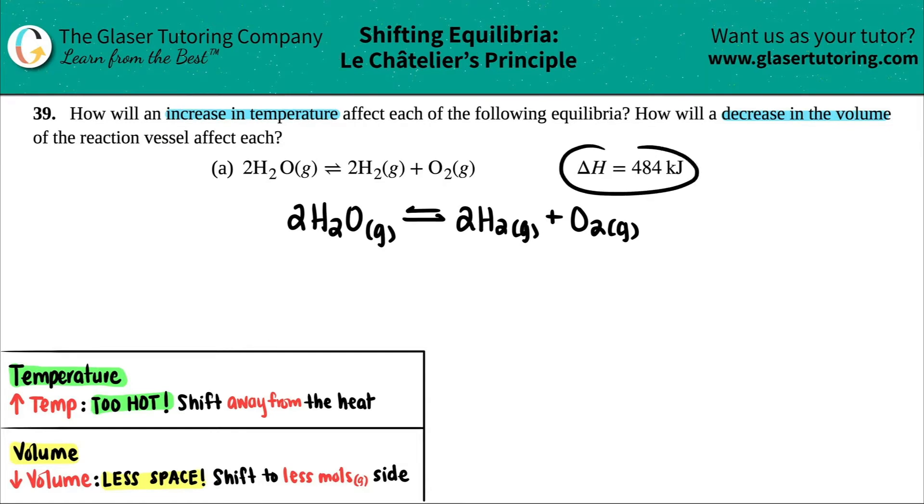And when they give me a delta H value, the only thing that I really care about is where the heat is located. Is the heat either on the reactant side or the product side? That comes from whether this delta H is a positive or a negative value. Since this delta H is a positive value, do I care that it's 484? No, I just care that it's a positive value.